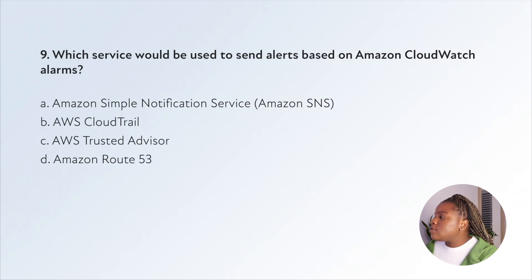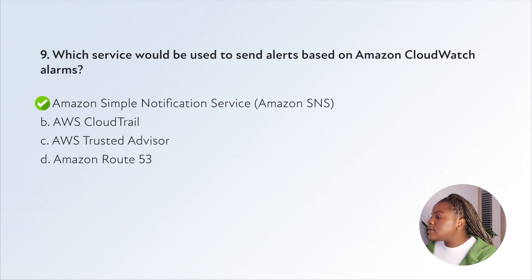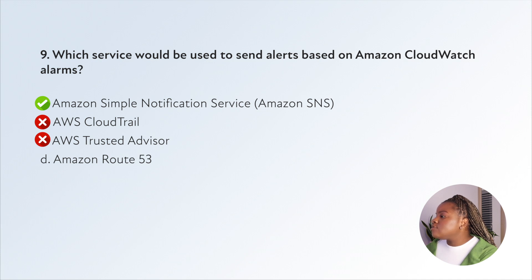Question nine: which service would be used to send alerts based on Amazon CloudWatch alarms? Option A, Amazon Simple Notification Service (SNS), is a fully managed messaging service for both application-to-application and application-to-person communication — that looks like a good choice. CloudTrail records API calls — not it. Trusted Advisor provides best practice recommendations — not it. Route 53 is a domain name system — nothing to do with sending alerts. So the right answer is Amazon Simple Notification Service.